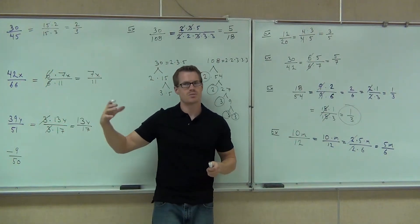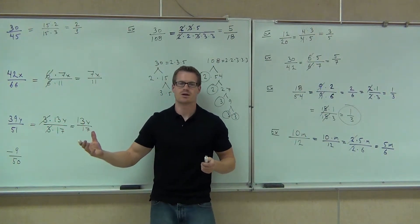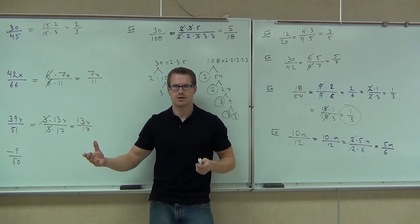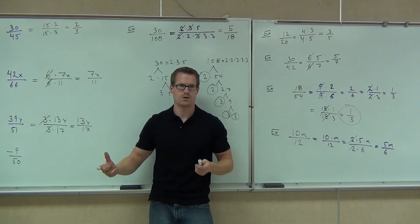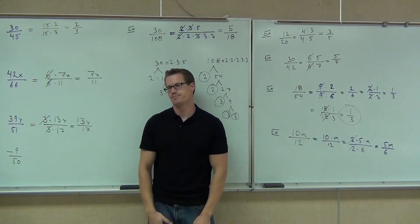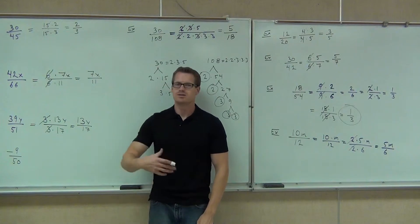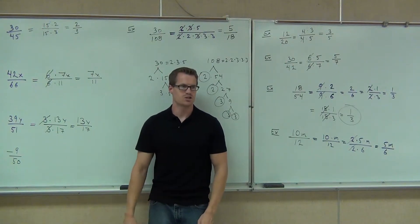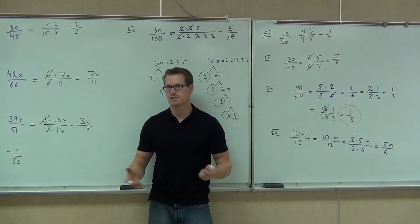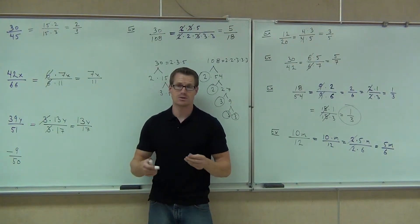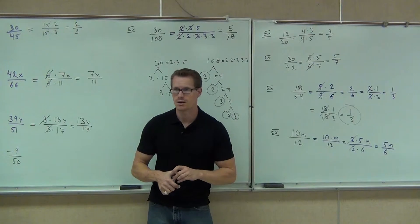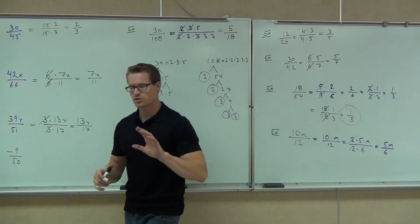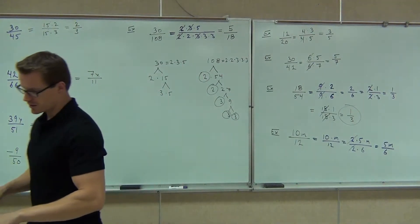But when you deal with numbers like — oh my gosh — 312 over 694, do the prime factorization. It will take you less time unless you have a calculator, which you won't have on your test. So that's just another tool for your toolbox.